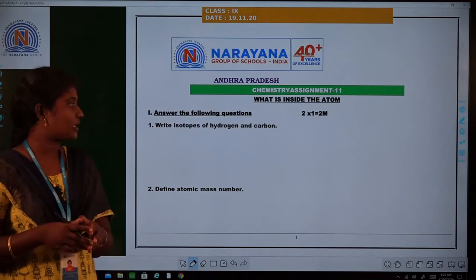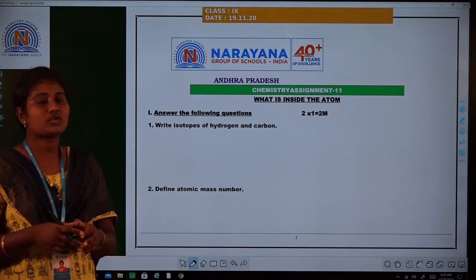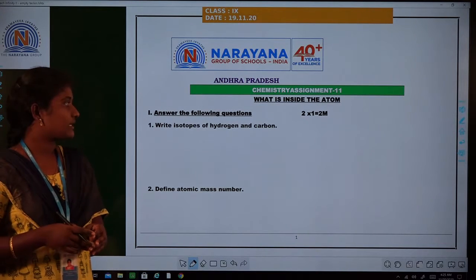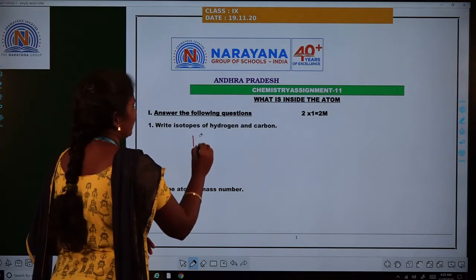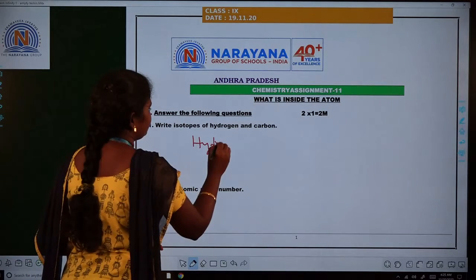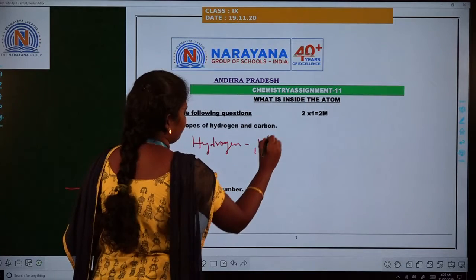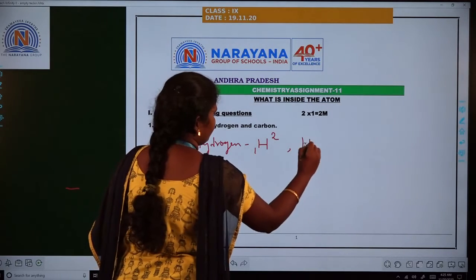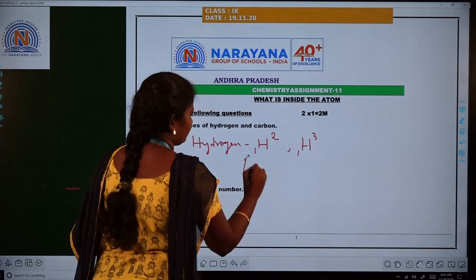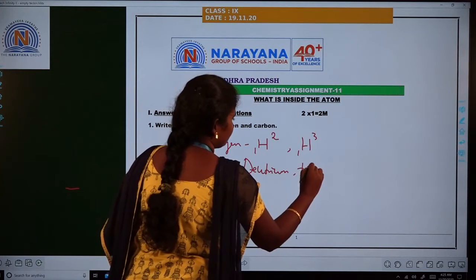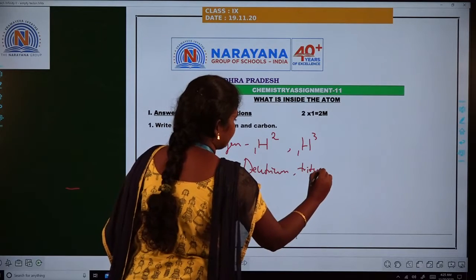Write isotopes of hydrogen and carbon. The isotopes of hydrogen are deuterium and tritium. Let us write the hydrogen isotopes: deuterium and tritium.